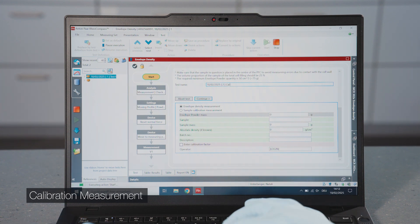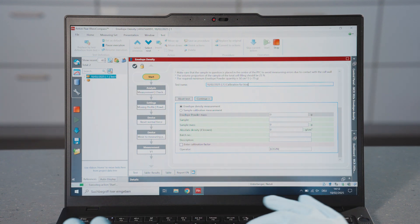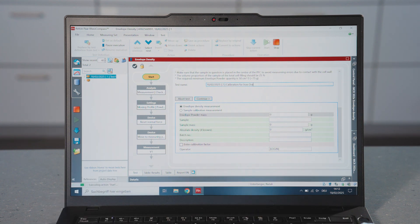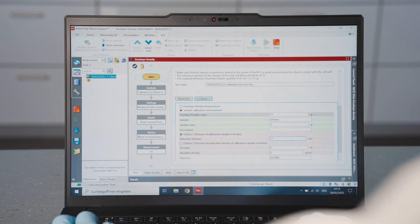Select Calibration Measurement to calculate the calibration factor for a specific sample type. The calibration factor is used for detailed detection of sample irregularities. In addition to the standard inputs, enter the known volume or the absolute density and porosity of the calibration sample.